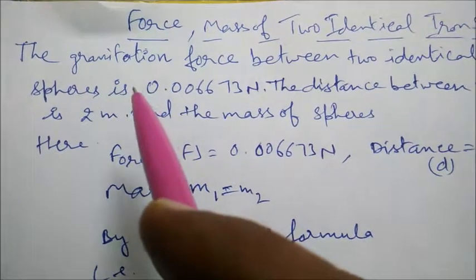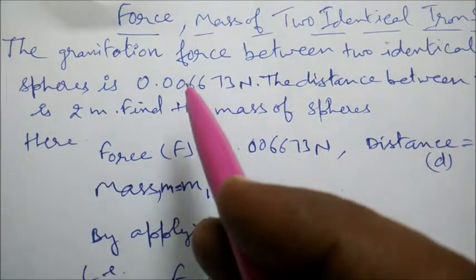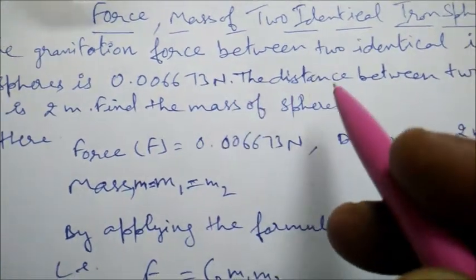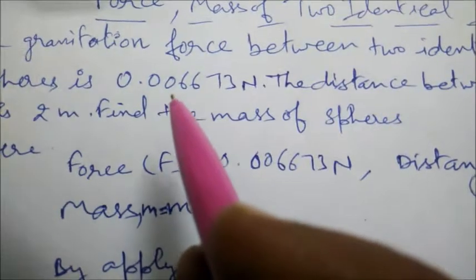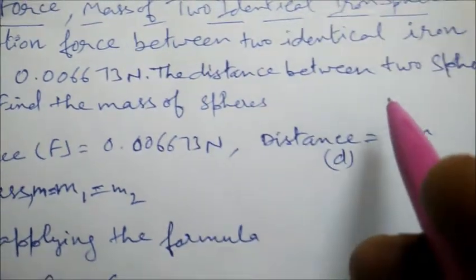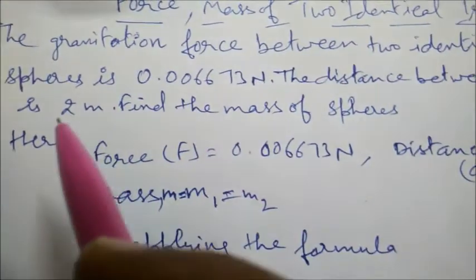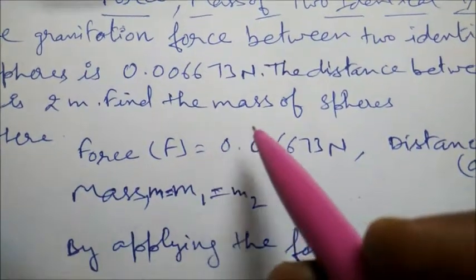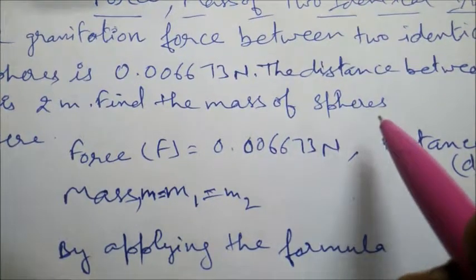The gravitational force between two identical iron spheres is 0.006673 Newton. The distance between the two spheres is 2 meters. We have to find the mass of these spheres.